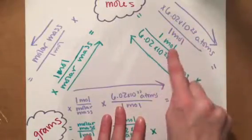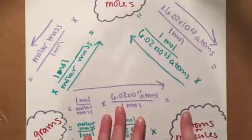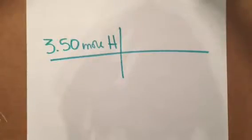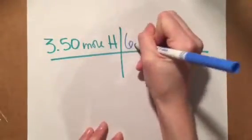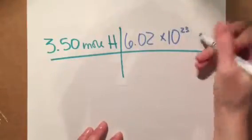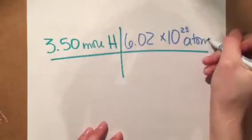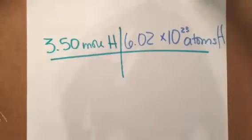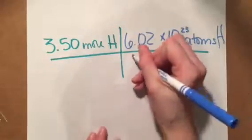So you take 3.5 mole hydrogen, and that will be multiplied by 6.02 times 10 to the 23rd atoms H over 1 mole H.